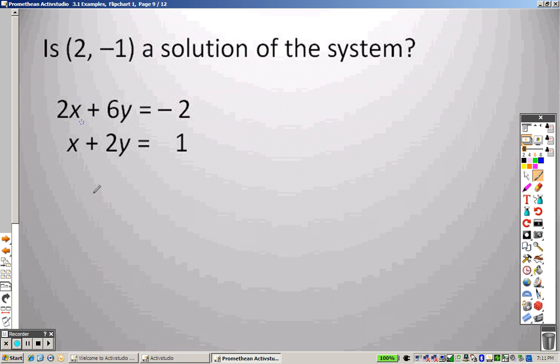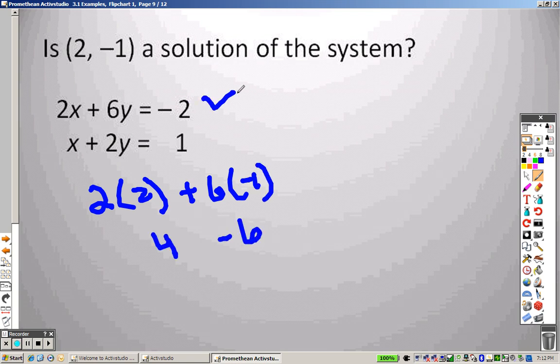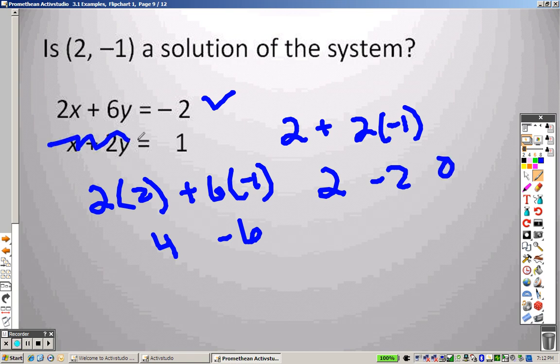And to check this out, you just plug it in again. It has to work for both. So 2 and negative 1: that's 4, that's negative 6. So it works for the first one. If I plug it in for the second one, that's 2, 2 times negative 1. So I get 2 and negative 2, which is 0. So no, it does not work because it doesn't work in the second one. Okay, so if you have any other questions or concerns, please let me know. I hope that helped with graphing to find your answers for equations.